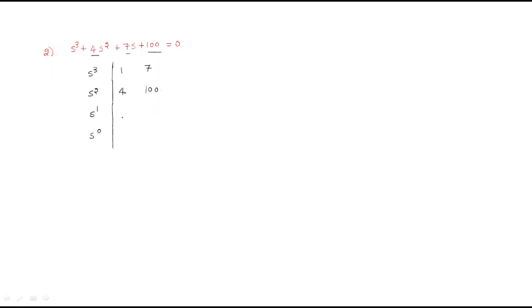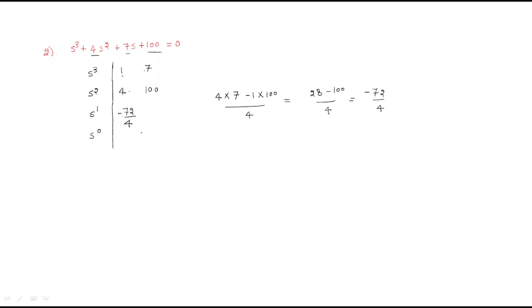Now we need to find the s¹ row coefficient: (4×7 − 1×100) / 4. That is 28 − 100 divided by 4, which gives −72/4.